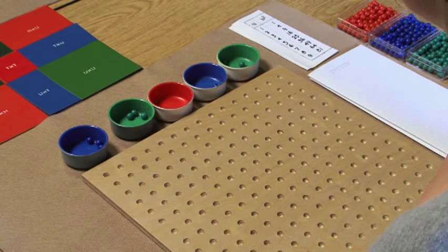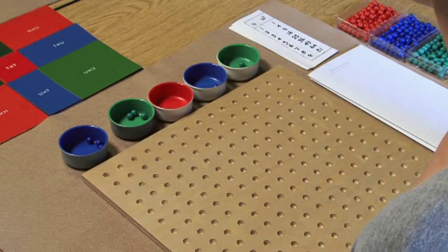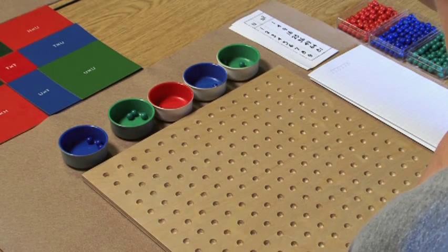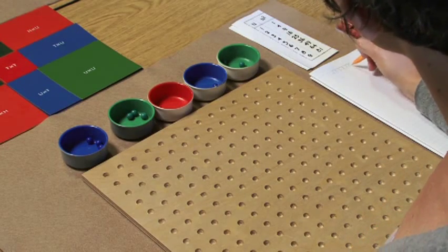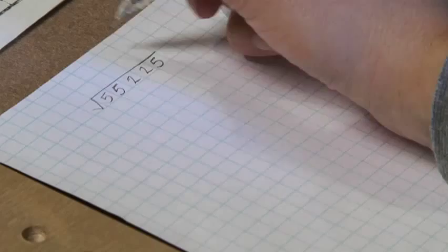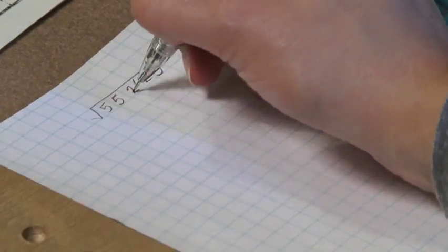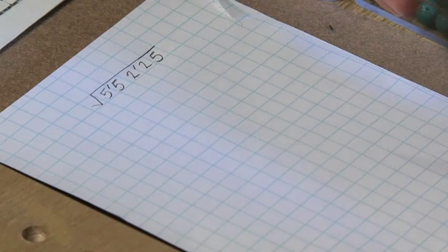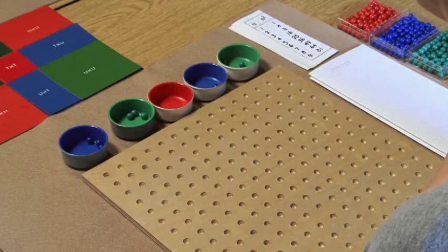The first step is to mark off every two digits, or what we refer to as periods in our radicand. So starting on the right, we're going to count over one, two, put a tick mark, one, two, another tick mark, and this will tell us how many digits are going to be in our root.